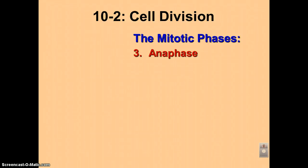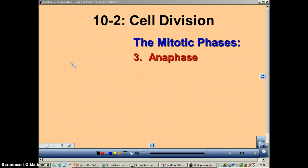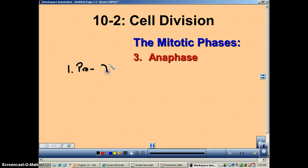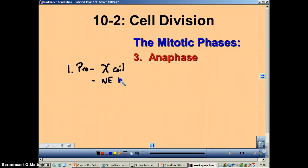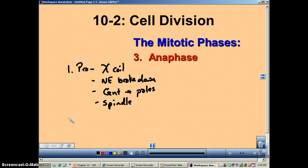Welcome to podcast number six from chapter 10. In this podcast we're going to focus on the last two phases of mitosis: anaphase and telophase. But first let's just review the first ones that happened. The first phase was prophase — the chromosomes coiled up, the nuclear envelope broke down, the centrioles went to the poles, and the spindle formed. A lot of stuff happens in prophase, that's why it's one of the longest.